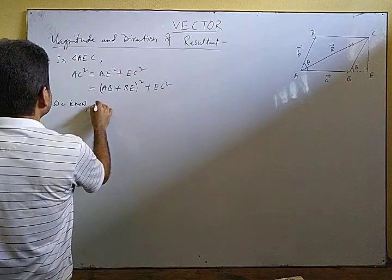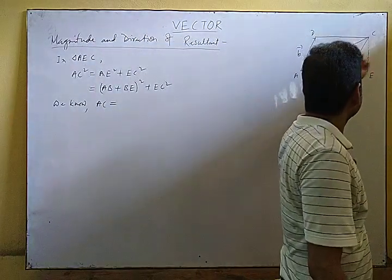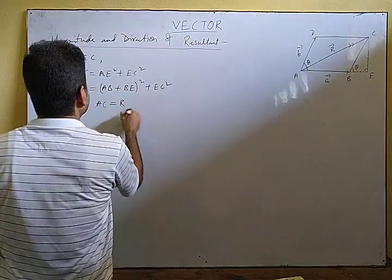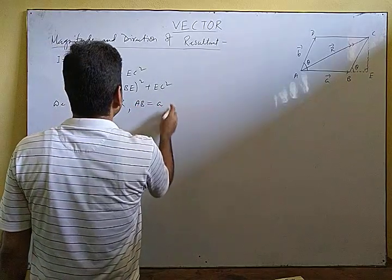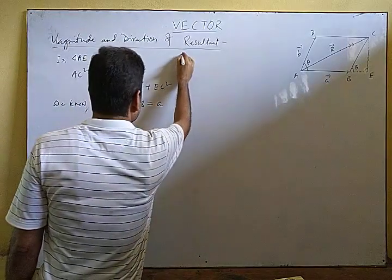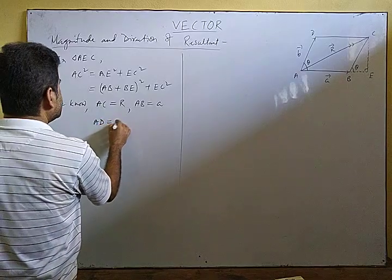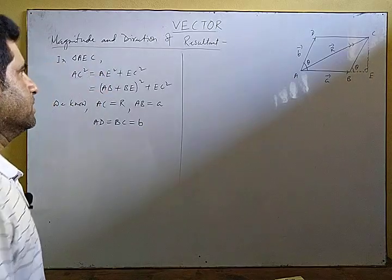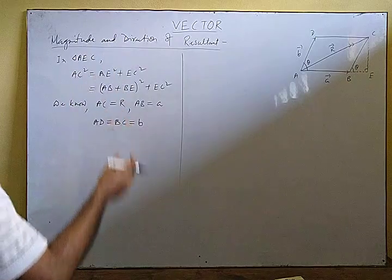We know AC is the resultant, so AC = R (the resultant magnitude). AB is vector A with magnitude A. AD is equal to BC — they are opposite sides, so vector AD and BC are equal in magnitude and parallel in direction. BC = B (magnitude of vector B).